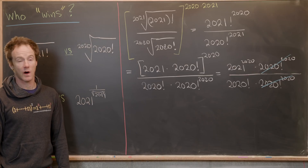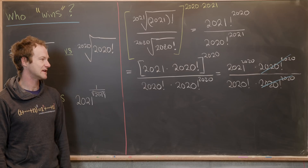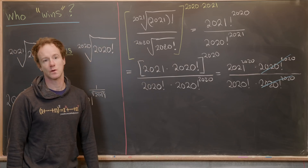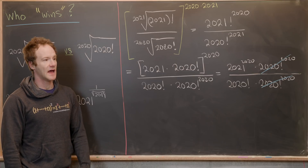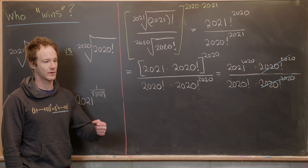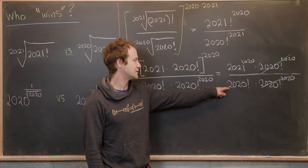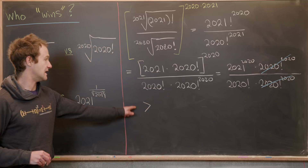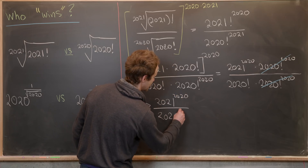Now we move into inequalities. Notice that 2020 factorial is most definitely smaller than 2020 to the power of 2020 — because 2020 factorial is 2020 times 2019 times 2018 and so on, and if we replace each factor smaller than 2020 with 2020, we get something larger. Since 2020 to the 2020 is larger than 2020 factorial, it is larger in the denominator, giving us the inequality in the direction of 2021 to the 2020 over 2020 to the 2020.